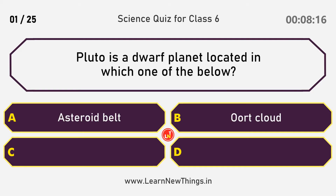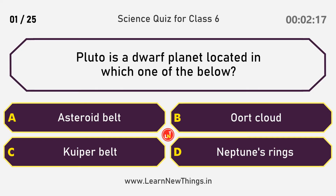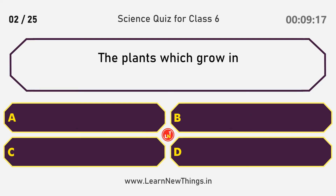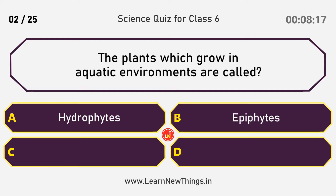Pluto is a dwarf planet located in which one of the below? Answer: Kuiper Belt. The plants which grow in aquatic environments are called?